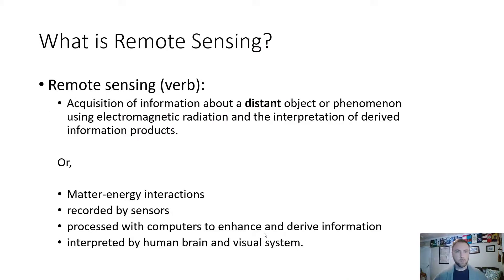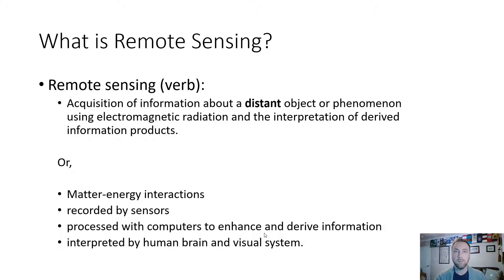So what is remote sensing? Remote sensing is an act of remotely viewing distant objects. It is the acquisition of information about a distant object or phenomenon using electromagnetic radiation and the interpretation of derived information products. In short: matter-energy interactions recorded by sensors, processed with computers to enhance and derive information, and interpreted by the human brain and visual system. It's the collection of visual data at a distance — hence remote.